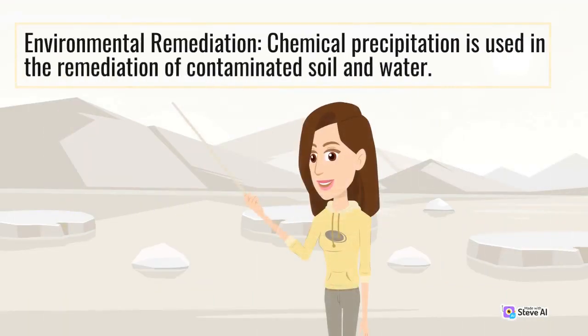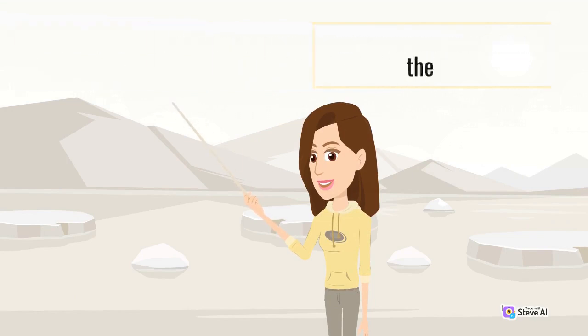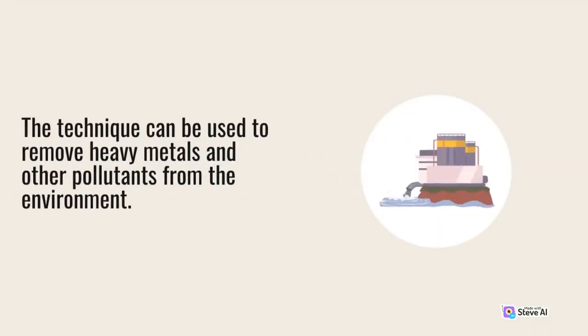Environmental remediation: Chemical precipitation is used in the remediation of contaminated soil and water. The technique can be used to remove heavy metals and other pollutants from the environment.